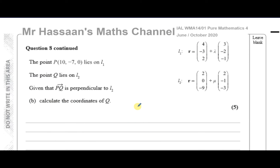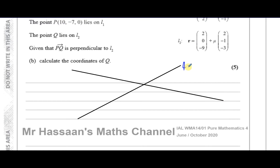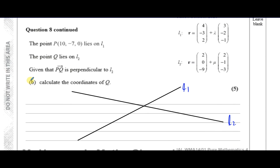Now for part B: the point P(10, -7, 0) lies on line 1 and the point Q lies on line 2. Given that PQ is perpendicular to line 2, calculate the coordinates of Q. It's always good to make a little sketch in these types of questions: we have line 1 and line 2, P lies on line 1, Q lies on line 2, and the line from P to Q is perpendicular to line 2, giving a right angle there.